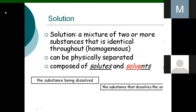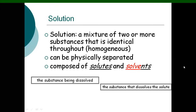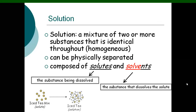A solution is a mixture of two or more substances that is identical throughout — homogeneous — and can be physically separated. It is composed of solutes. A solution has two components: one is solute and the other is solvent. The solute is the substance being dissolved, and the solvent is the substance that dissolves the solute. For example, tea mixed with water: tea is the solute, water is the solvent, and tea mixed with water is the solution.